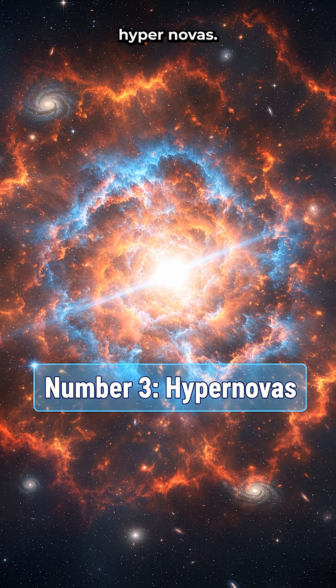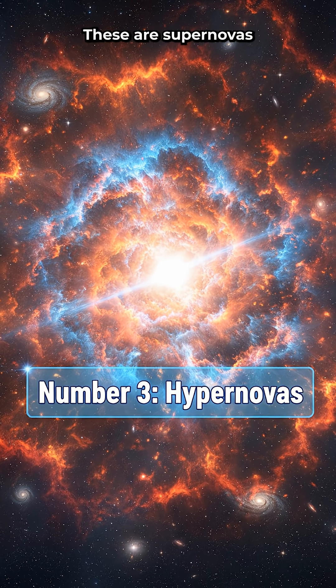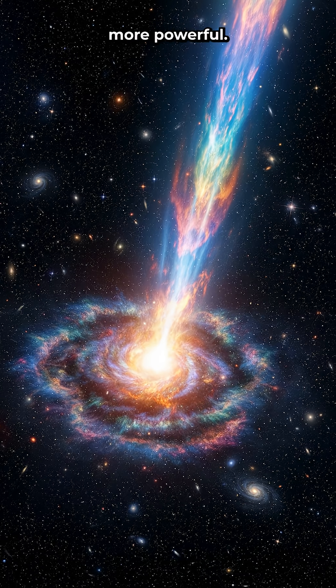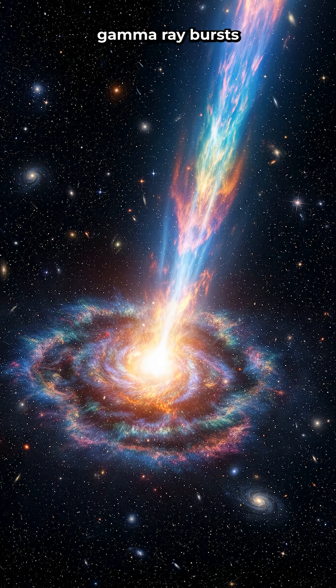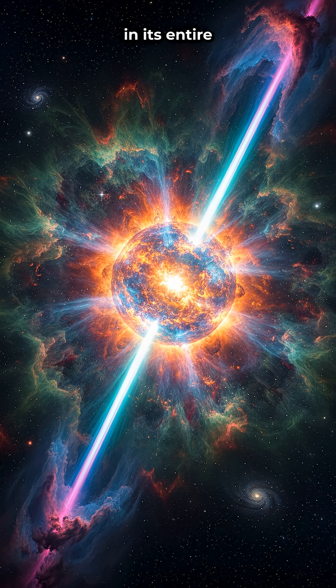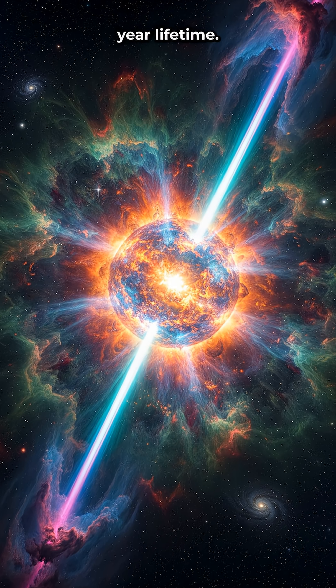Number 3: Hypernovas. These are supernovas on steroids, 100 times more powerful. They create gamma-ray bursts that can release more energy in 10 seconds than our sun will produce in its entire 10 billion year lifetime.